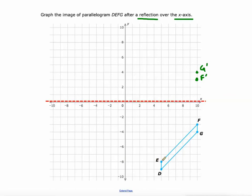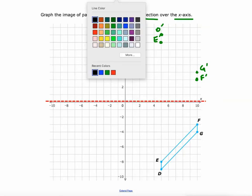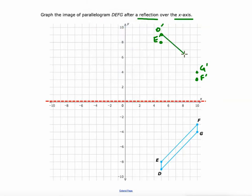e is at negative 8. So I'm going to jump all the way up to positive 8. It's still 5 to the right of the y-axis. So there's e prime. d is at negative 9. So I can go all the way up here to positive 9. So there's d prime. And then if we connect these points, there's our new figure after it's been reflected across the x-axis.